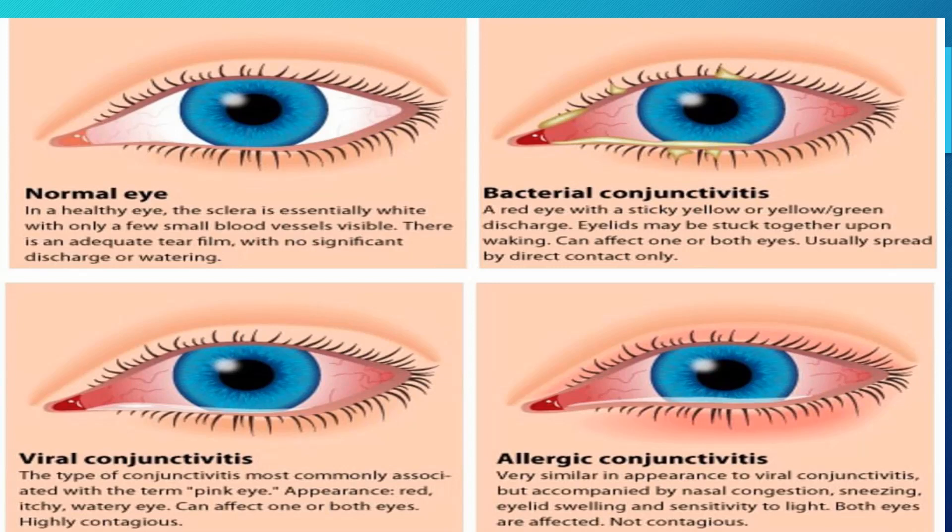Viral conjunctivitis is also common, presenting with redness, watering, and slight itching. It can affect one or both eyes — sometimes starting from one and then infecting both — and is highly contagious. If one family member is suffering from viral conjunctivitis, other family members usually get infected as well. Adenoviral infection is common in families or extended families living in close contact.